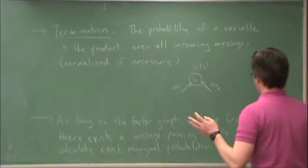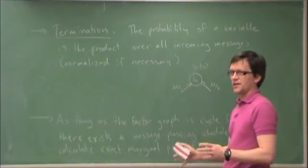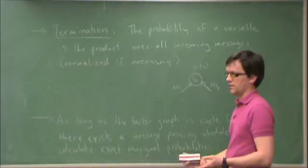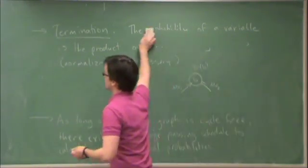But this is basically what you need to know as far as this course is concerned. Just those rules and how they work with the factor graph. Now, what does this have to do with decoding?